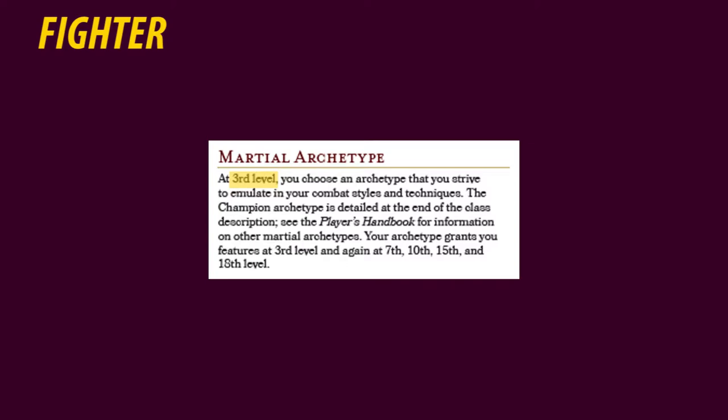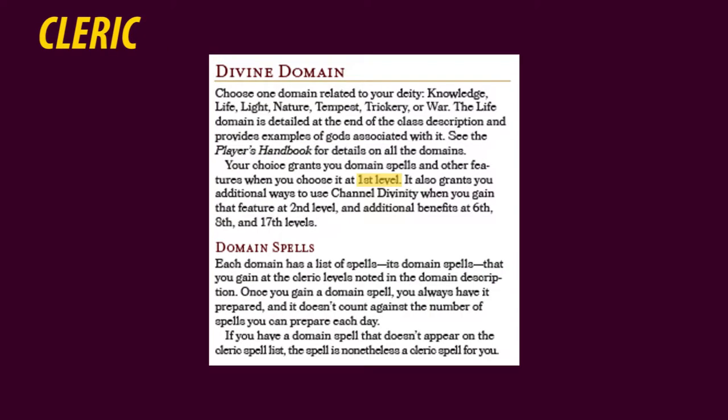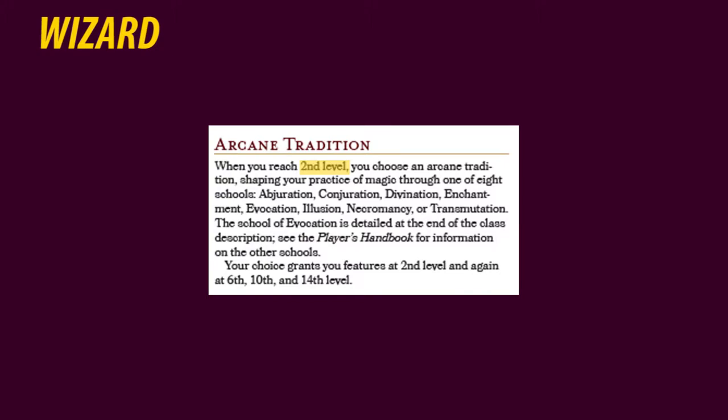One can thus say that class is the essence of your character. Every class consists of different so-called archetypes or subclasses, but when you get to choose your archetype depends totally on the class. For the fighter class, it only becomes relevant at level 3, while a cleric has to decide his divine domain right at the beginning at level 1. A wizard gets to decide his arcane tradition at level 2.